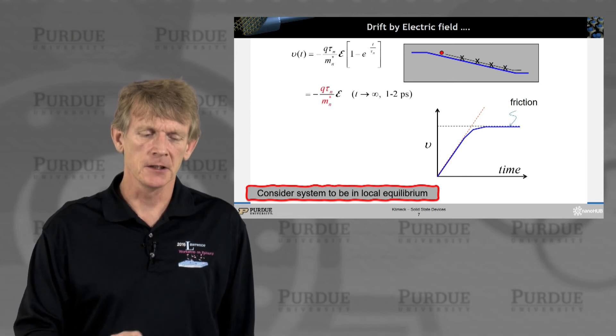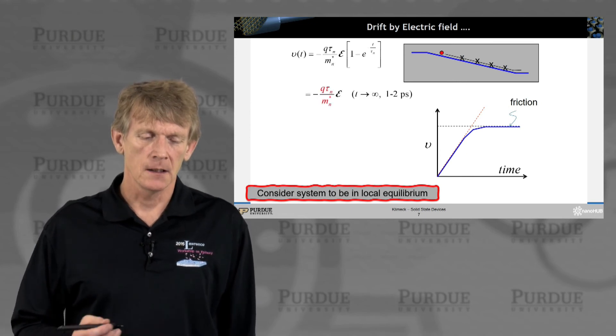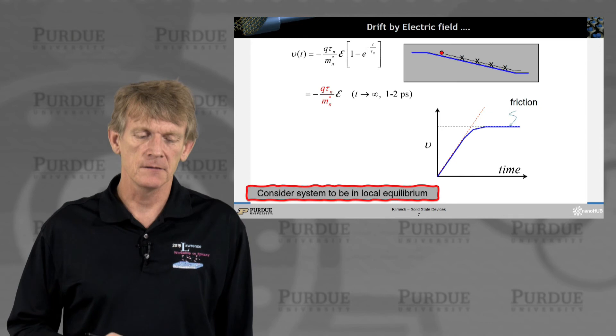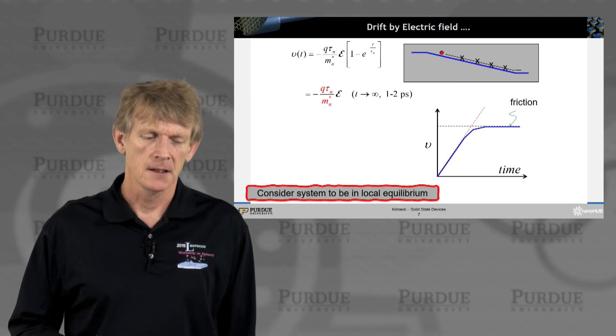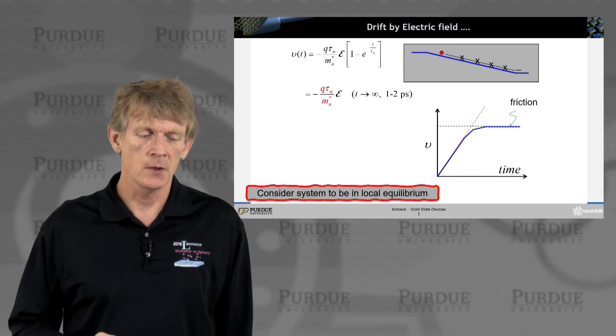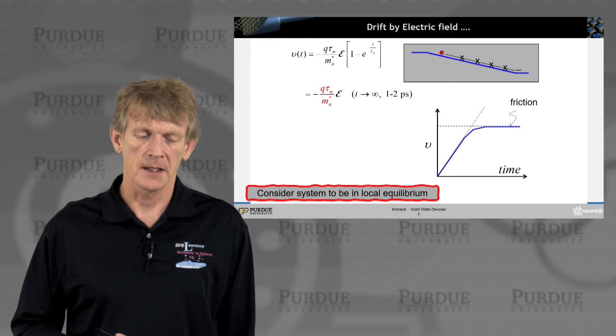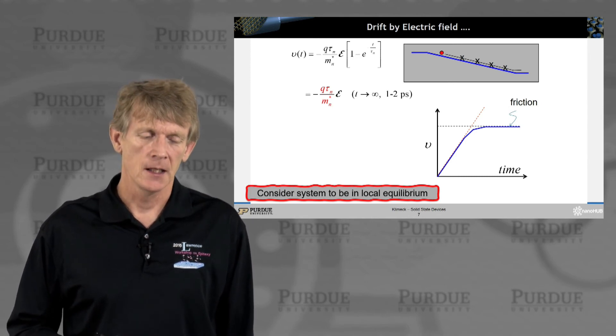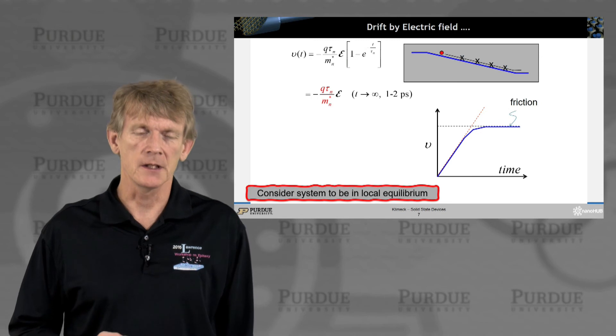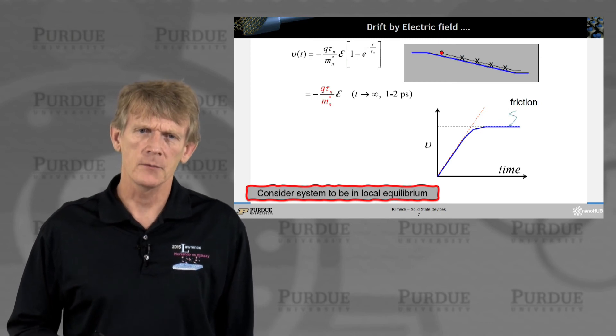So here's again this exponential. And we can say that at infinity, time of infinity, you will have reached some terminal velocity. That is, that the electron can reach. And again, that is related to the relaxation time tau.